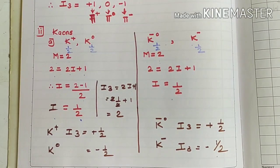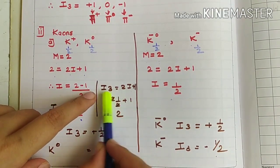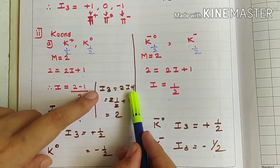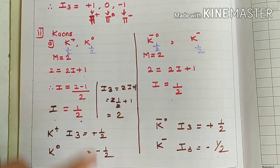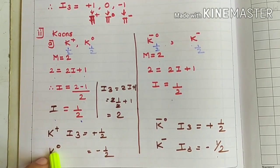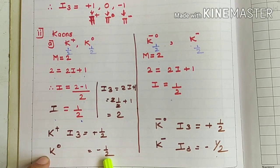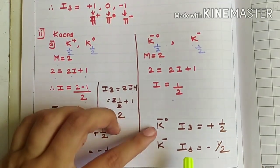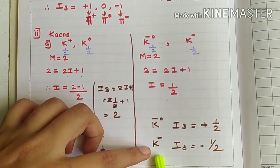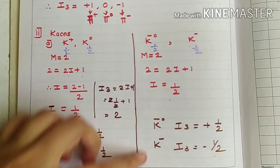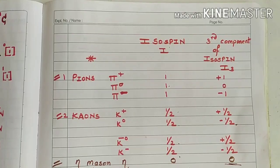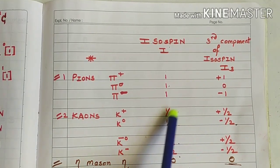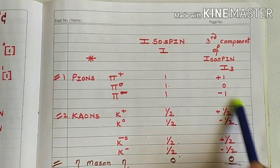Now let's find the third component of isospin for kaons. Using i3 = 2i + 1 with i = 1/2, we get 2(1/2) + 1 = 2, meaning i3 has two values: +1/2 and −1/2. So K plus has i3 = +1/2 and K naught has i3 = −1/2. Similarly, K-bar naught has i3 = +1/2 and K minus has i3 = −1/2. Put all these values into the chart you are preparing for i and i3.